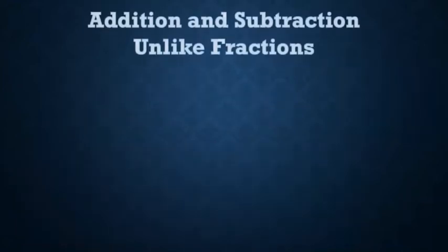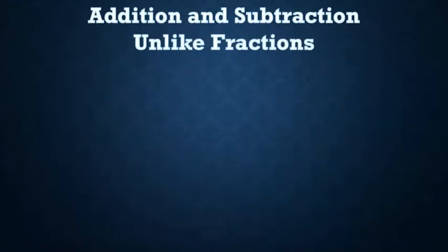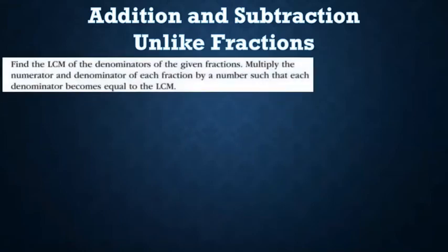So how do we add or subtract unlike fractions? To add or subtract unlike fractions, we have to find the LCM of the denominators of the given fractions, and then multiply the numerator and the denominator of each fraction by a number such that each denominator becomes equal.